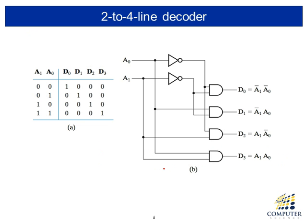For example, consider a 2-by-4 decoder with 2 inputs and 4 outputs. If we label the inputs A1 and A0, we have 4 possible codewords. For each codeword, one output is uniquely identified: when the input is 0,0 only D0 is activated; 0,1 activates D1 only; 1,0 activates D2 only; and 1,1 activates D3 only.